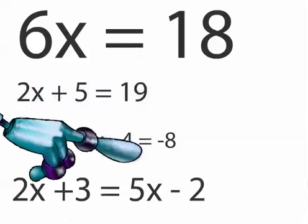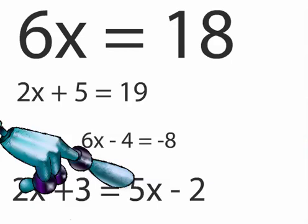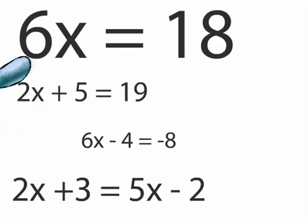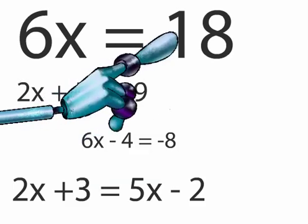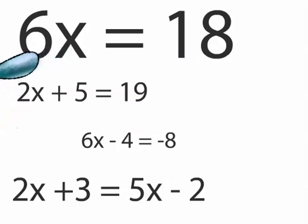All of the following algebra problems are called equations. They are called equations because of the equal sign. An equation means that one side is equal to the other side. The goal is to simplify the equation and isolate the variable x on one side.